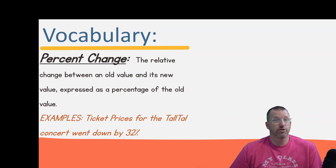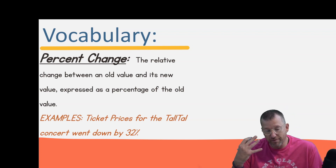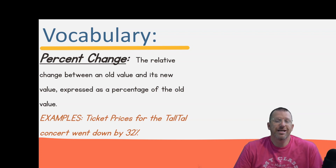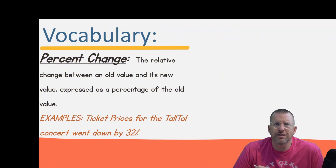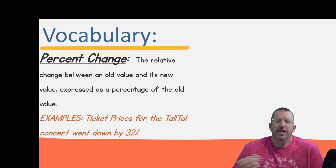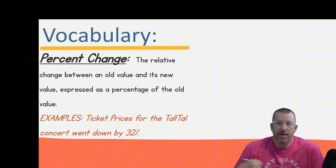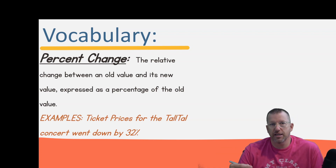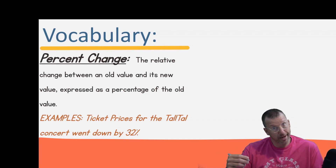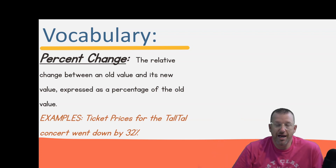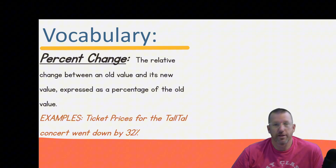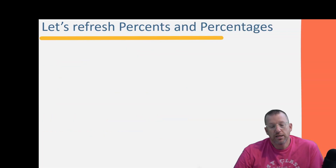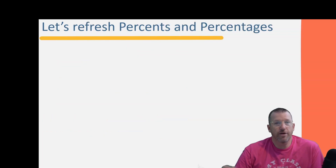For example, ticket prices for the 'Tall Towel' concert went down by 32 percent — that's percent change. The tickets started at a certain price, but when no one was buying them, the value went down, and people were buying them for 32 percent cheaper than the original price.